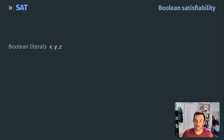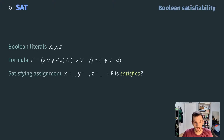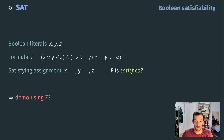First, a quick reminder of what a SAT problem — or boolean satisfiability problem — is. We have a set of boolean literals x, y, and z, and using these literals we can build a formula f. In this example: (x or y or z) and (not x or not y) and (not y or not z). We want to answer: is there a satisfying assignment to x, y, z such that f is true? We're going to use Z3 to solve this problem.